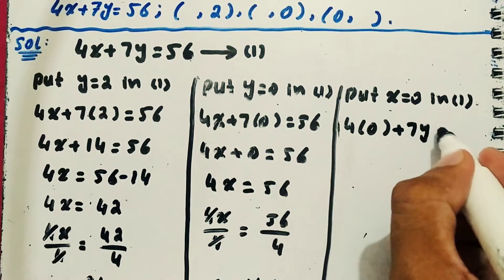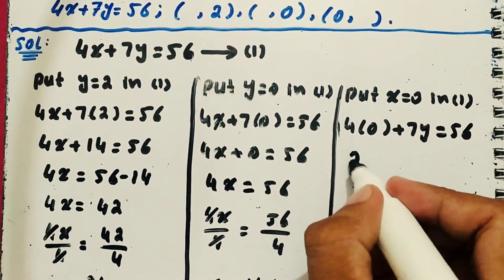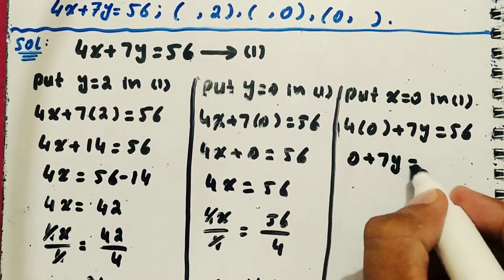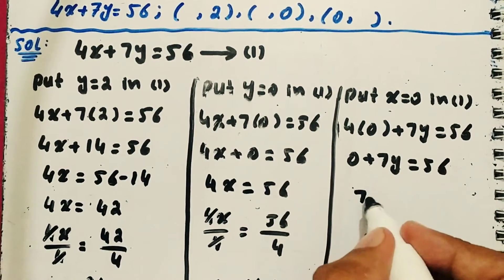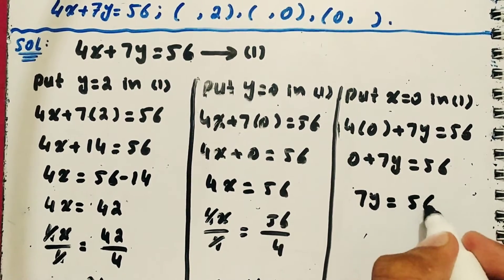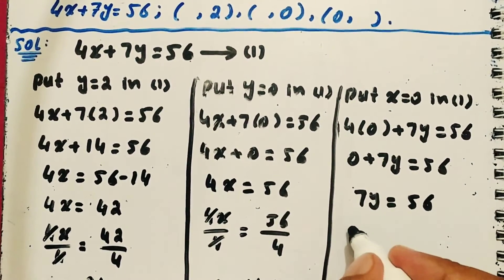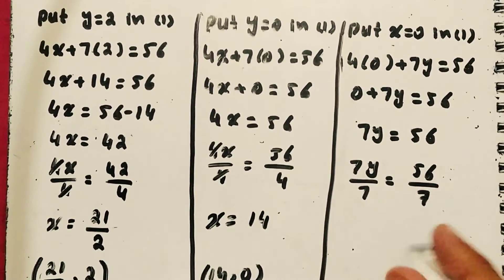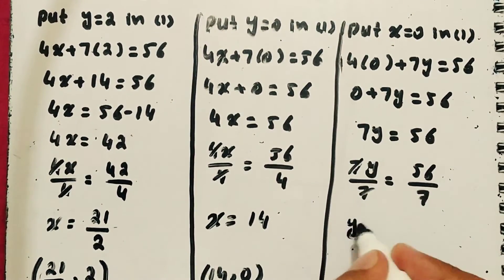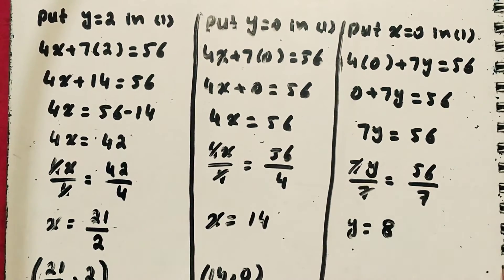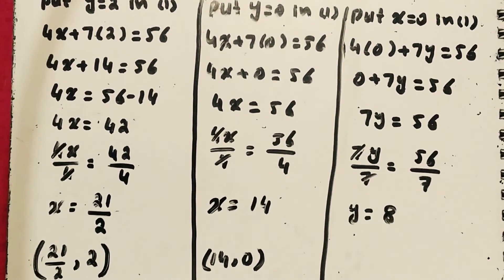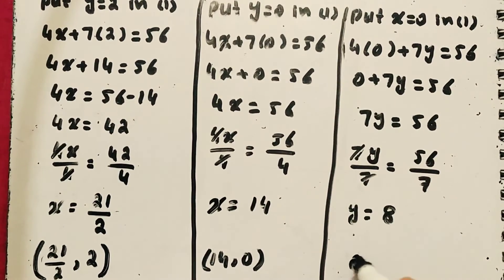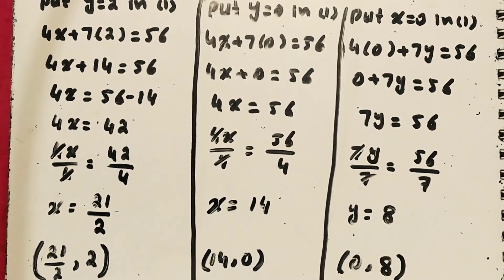Teesra ordered pair: x = 0, y find karna hai. 4(0) + 7y = 56. So 7y = 56. Dono taraf 7 se divide karta hoon: 7y/7 = 56/7. 7 aur 7 cut jayenge. y = 56/7 = 8. Hamare paas ordered pair complete ho gaya: x = 0 aur y = 8. Yeh hamare paas teesra ordered pair complete ho gaya.